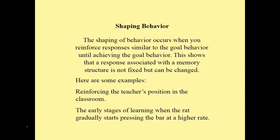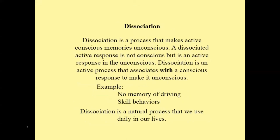Here are some examples of shaping. When all students agree to attend to the teacher when he approaches the corner of the room, in time the teacher will lecture from the corner of the room. Another example: when you put a naive rat into the Skinner box, the rat gradually starts pressing the bar at a higher rate — this is the shaping of the bar press response. Dissociation is a process that makes active conscious memories unconscious. A dissociated active response is not conscious but is an active response in the unconscious.